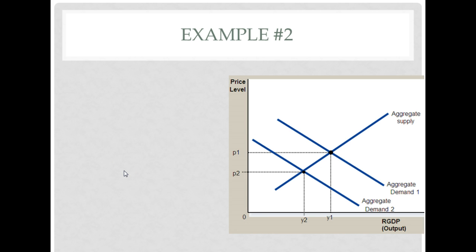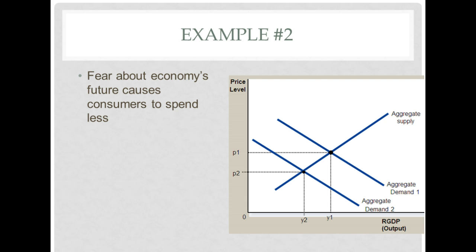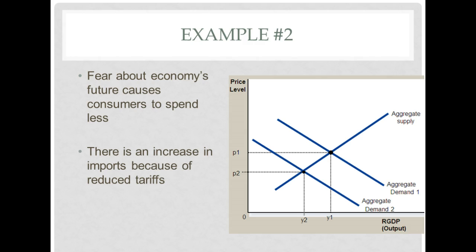Now let's look at some examples where aggregate demand decreases. If fear about the economy's future causes consumers to spend less, that would decrease consumption, shifting aggregate demand to the left. Another example: an increase in imports due to reduced tariffs. Remember, imports are negative in RGDP — net exports equals exports minus imports — so if imports increase, RGDP decreases and therefore aggregate demand decreases.